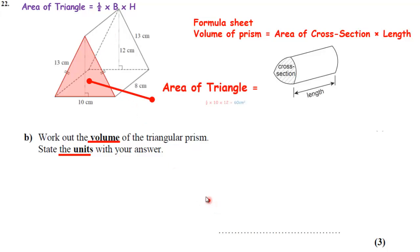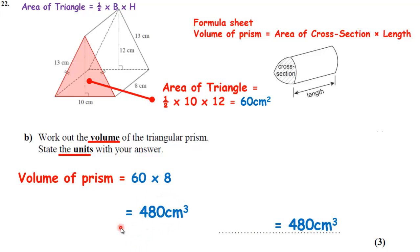We did this just before. A half 10 times 12 is 60, and it goes 8 back. So the volume is going to be 60 times 8. 60 times 8. 6 times 8 is 48. Add a 0 on, 480 cm cubed. Make sure you put the units in there, please. Right? That's your answer.